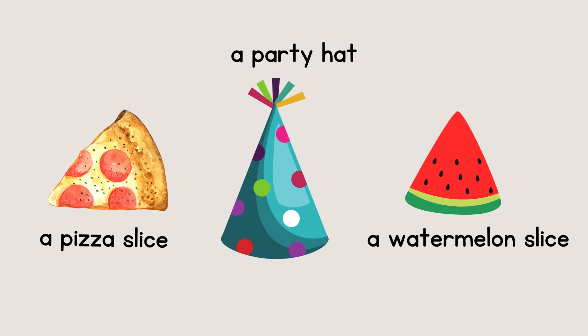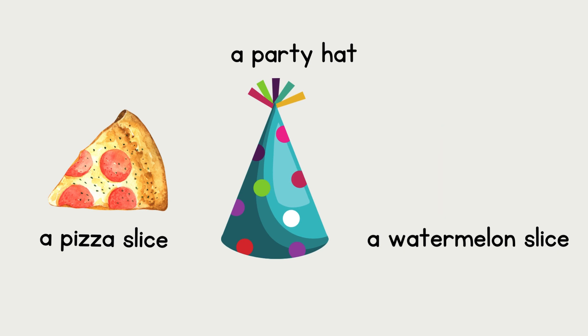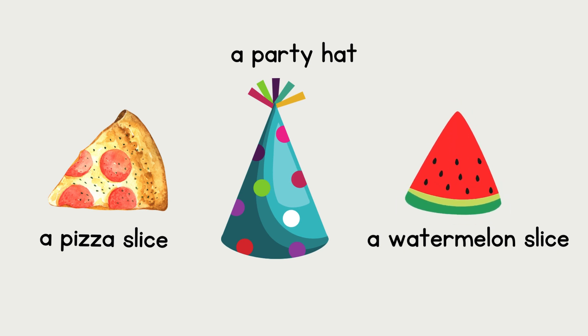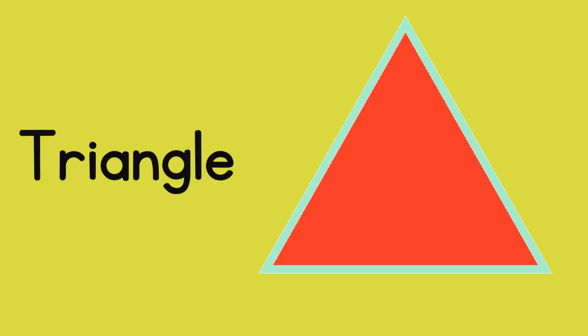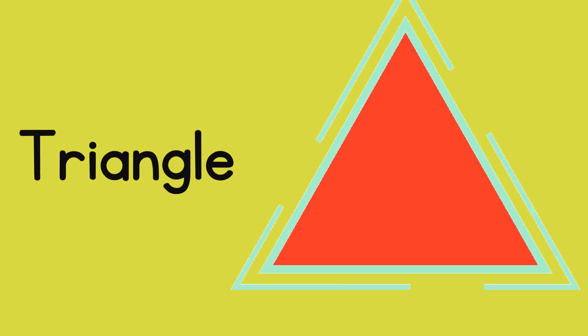Let's see which things are similar to a triangle shape. A pizza slice is a triangular shape, a party hat is also a triangle shape, and a watermelon slice also looks like a triangle shape. Now you know that a triangle has three sides and three corners. Which shape is this next?